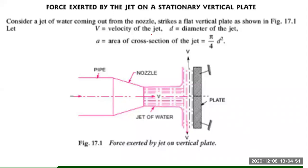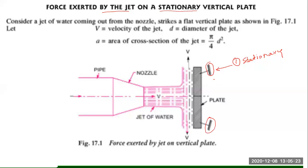In the previous classes we have seen four cases where we were calculating the force exerted by a liquid jet or fluid jet on stationary plates. I told you that we will be looking at two cases: the first one is for stationary and the second one when the plate is moving with some velocity. In that situation, we have to take care of the relative velocity. We will only revise the final formula and start solving the numericals.